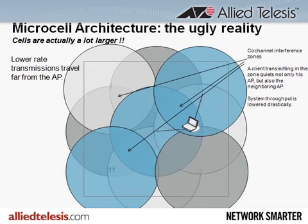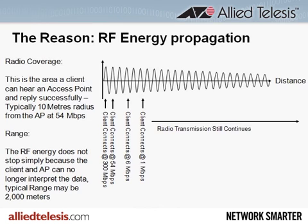Also, having a spacing of about 10 to 20 meters ensures that clients get higher data rates. Here's the problem: the RF energy that the APs and clients emit doesn't just travel 20 meters. In the average environment, it travels several hundred meters, as shown in the diagram. At the low signaling rates used by APs and clients to determine who can transmit, this RF energy is heard hundreds of meters from the transmission point.